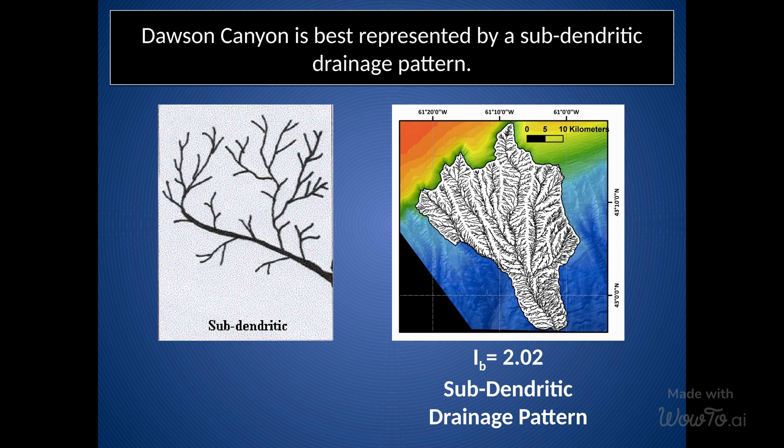Dawson Canyon is best represented by a sub-dendritic drainage pattern, characterized by a low stream frequency and high bifurcation ratio, which indicates a relatively simple and poorly connected drainage network. The branching index for Dawson Canyon was calculated to be 2.02, with a lower value indicating a simpler drainage network.